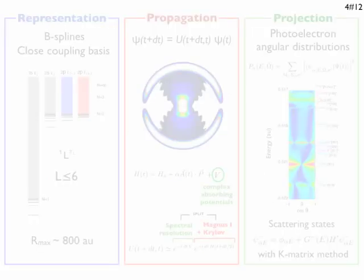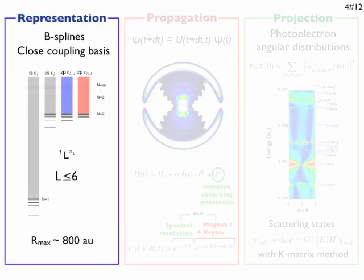Let's see how we organize the simulation. We expand the wave function on a B-spline close coupling basis, which comprises the 1s, the 2s and the 2p channels, and we enclose everything in a radial box, 800 atomic units large.